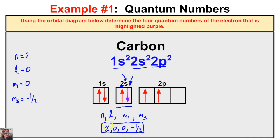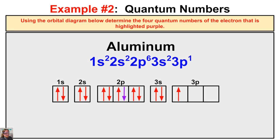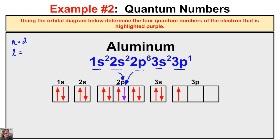The quantum numbers for this purple electron in the carbon atom are two, zero, zero, negative one half. That is the address for this electron. In the second example, we have aluminum with the electron configuration 1s² 2s² 2p⁶ 3s² 3p¹. We want to find the quantum numbers for the downward-facing electron in the 2p orbital. First, the principal energy level: this electron is in the second principal energy level, so n equals two.